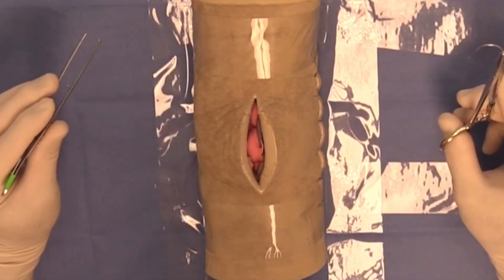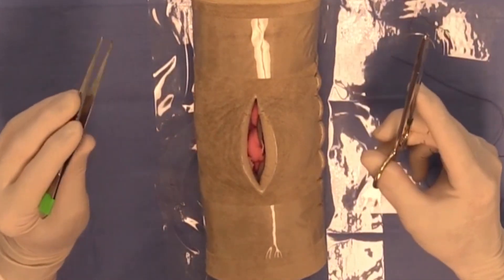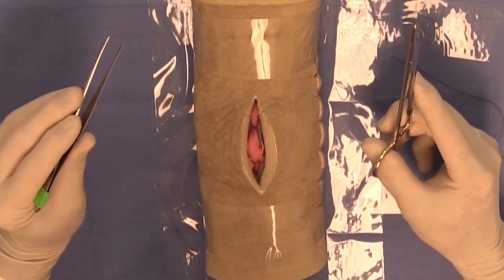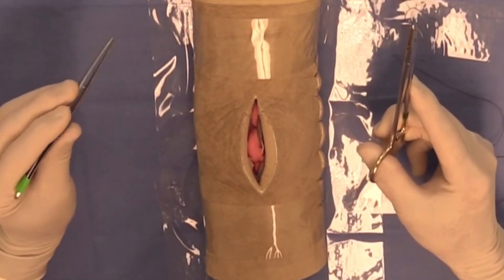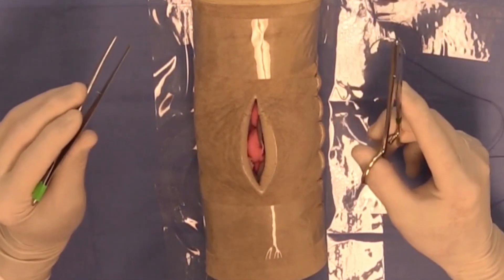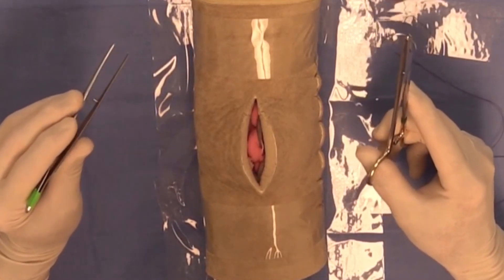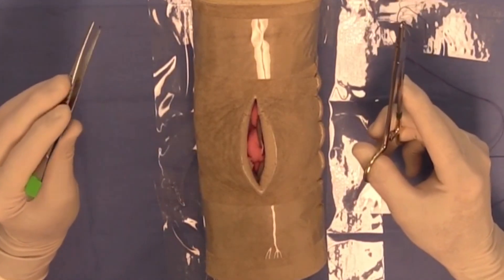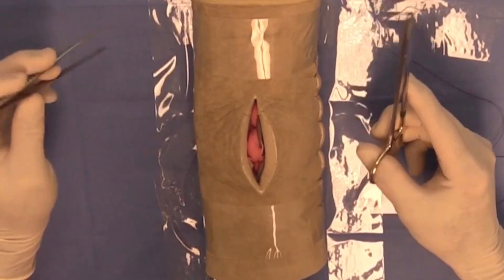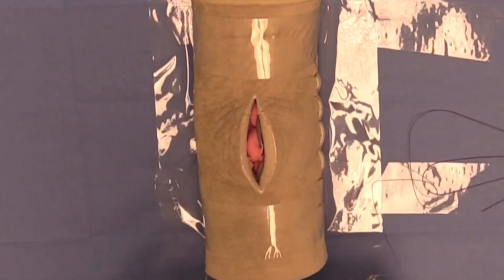The simple interrupted suture pattern is one of the most common suture patterns that you will perform in this course and in life. It's very versatile and well-suited to be used in various tissues.